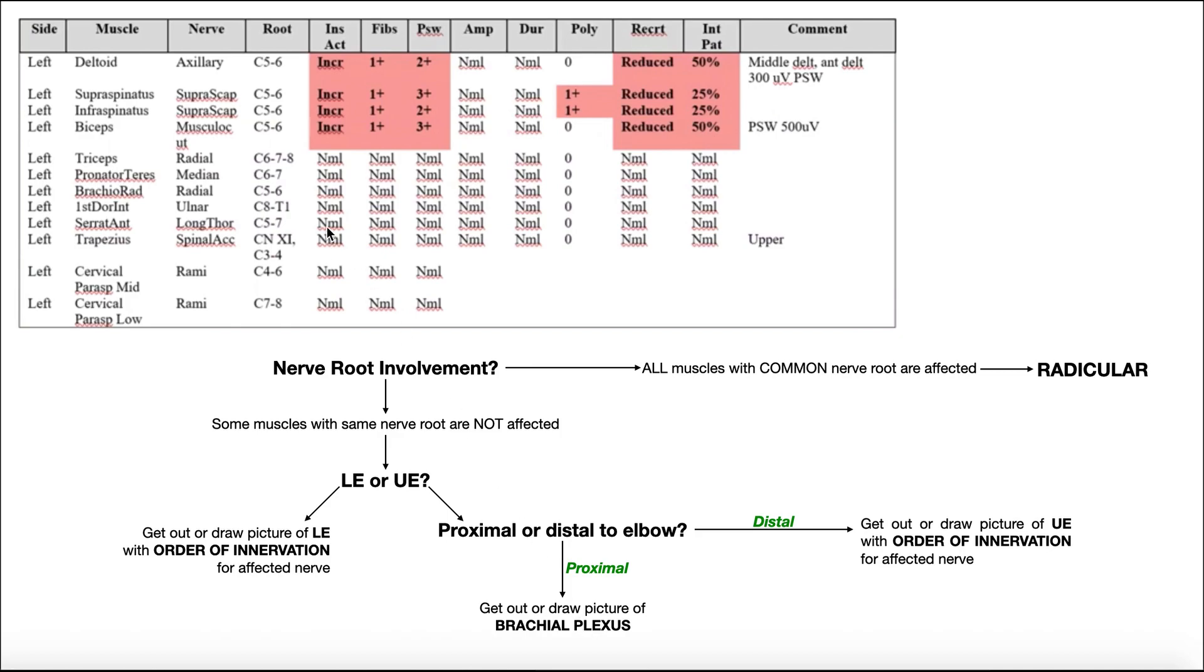I'll go to that slide in just a second, but let's take a look here. What nerves appear to be affected here? Axillary, suprascapular for both the rotator cuff muscles there and the musculocutaneous nerve. Let's remember that.